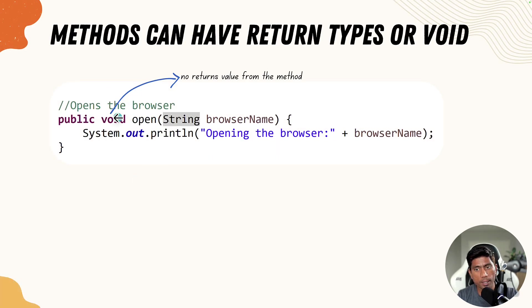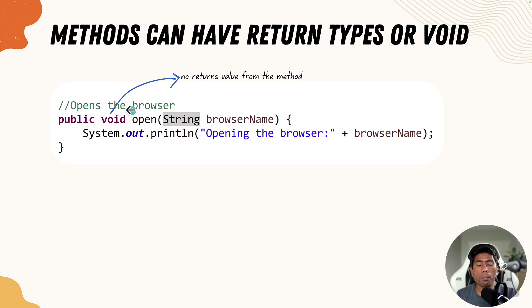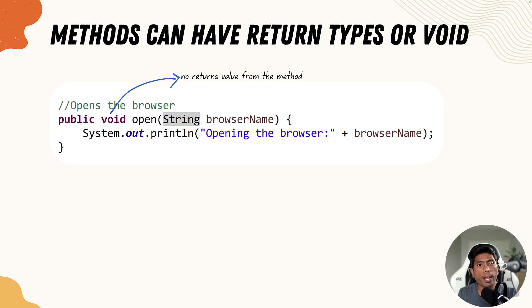A method will also have what is called a return type. All the code we've written so far has a void return type, meaning there is no return value from that method. But if you want to return some value, you can use primitive types like int, double, float, byte, or short, and also non-primitive types like String, arrays, classes, or interfaces. You can also return a collection like an ArrayList, dictionary, or HashMap.